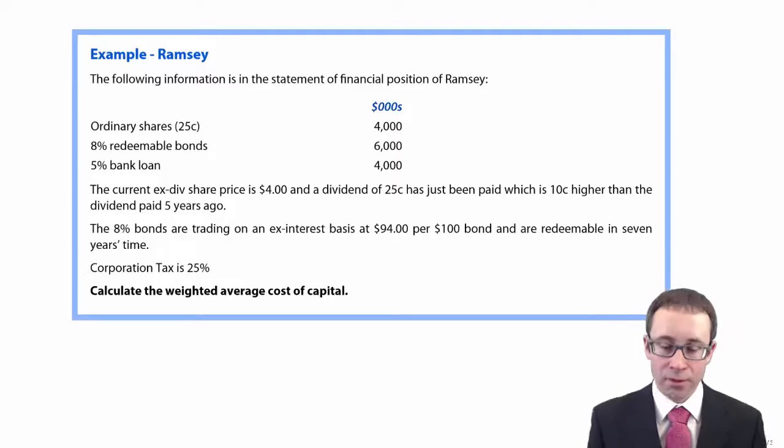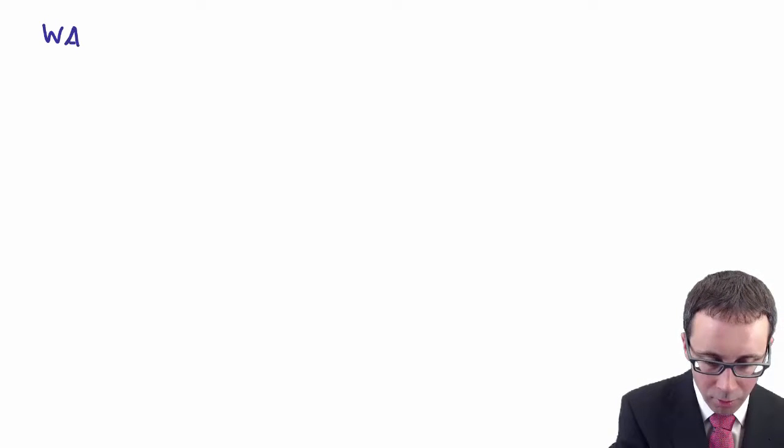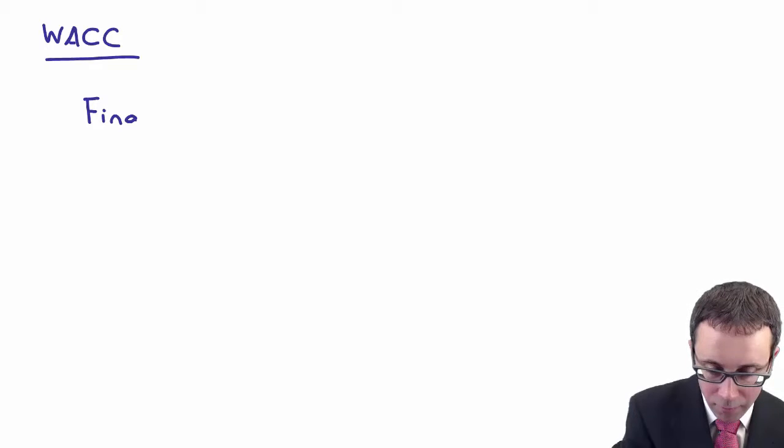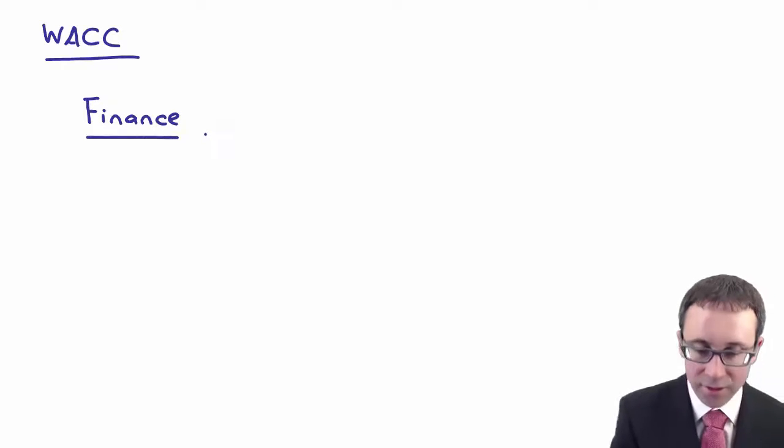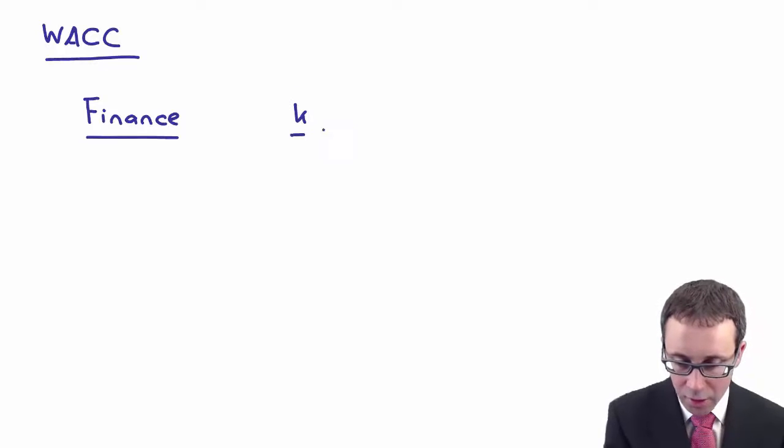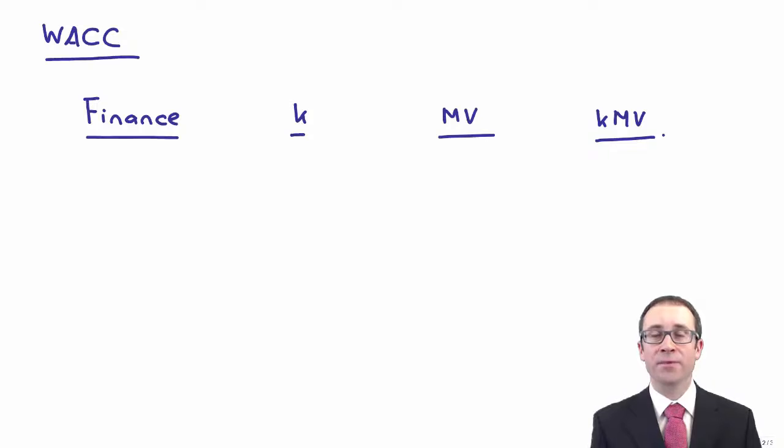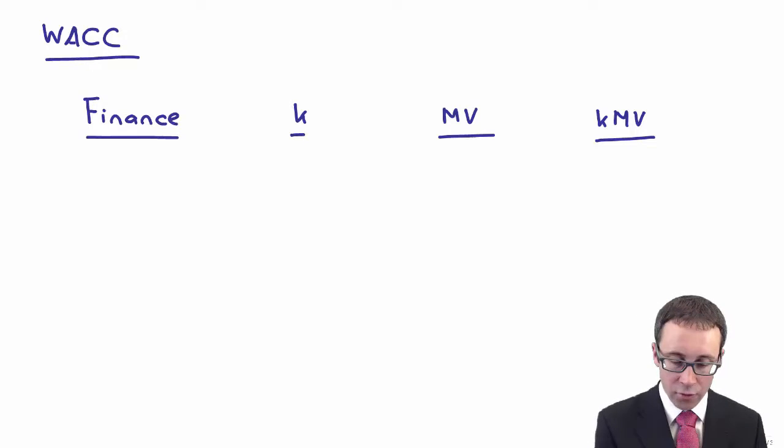It wants us to work out the weighted average cost of capital. So if that's the case, if you're working out your WACC, remember you need your tabular format. So we need to go through that and look at the form of finance, we need to look at the cost, we need to look at the market value, and then we look at the cost multiplied by the market value. So that table that we introduced right at the very start of the topic. Once we've got the table laid out, we need to go through and look at the forms of finance. So what have we got?